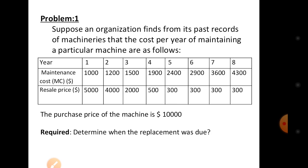Suppose an organization finds from its past records of machineries that the cost per year of maintaining a particular machine: Year 1, maintenance cost is 1000 and resale price is 5000. Year 2, maintenance cost is 1200 and resale price is 4000. The remaining information is given up to year 8. The purchase price of the machine is $10,000. Determine when the replacement is due.